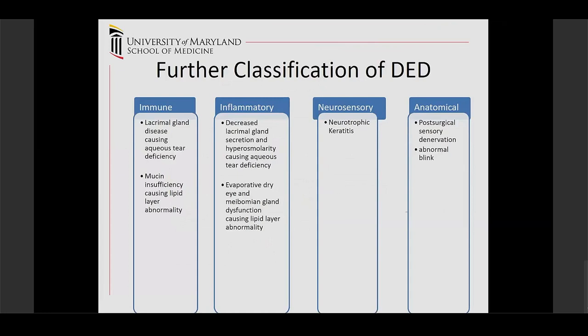Another way to think about dry eye disease is based on cause: immune-mediated, inflammatory, neurosensory, and anatomical changes. Immune-mediated causes can affect the lacrimal gland causing aqueous tear deficiency, or cause mucin layer and lipid layer abnormalities. Inflammatory changes can lead to decreased lacrimal gland secretion, hyperosmolarity, and evaporative dry eye. Neurotrophic keratitis covers neurosensory changes, and anatomically you can have post-surgical sensory denervation and abnormal blink.